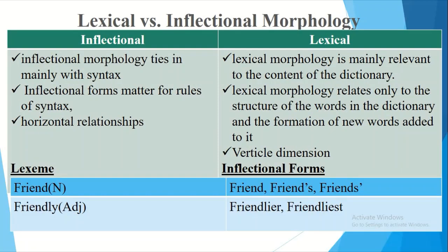Inflectional morphology ties in mainly with syntax. In contrast, lexical morphology is mainly relevant to the content of the dictionary. Similarly, inflectional forms matter for rules of syntax. However, lexical morphology relates only to the structure of words in the dictionary and the formation of new words added to it.